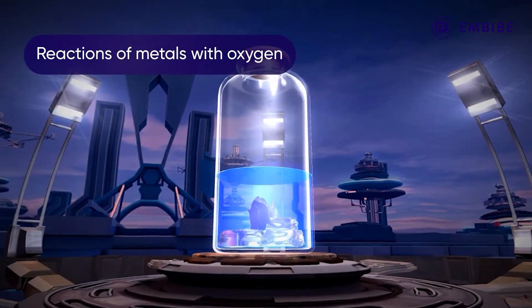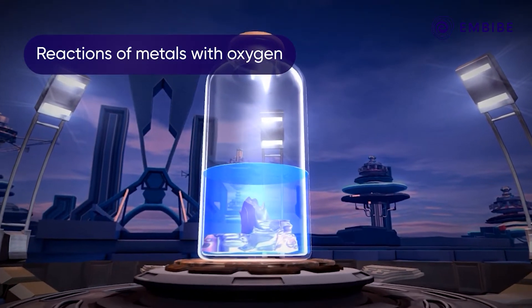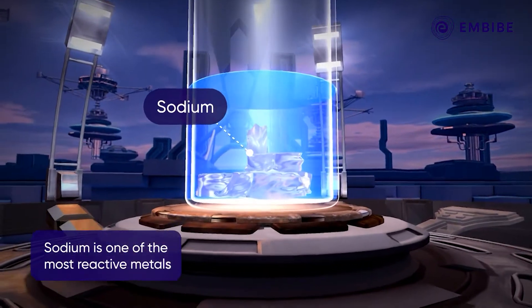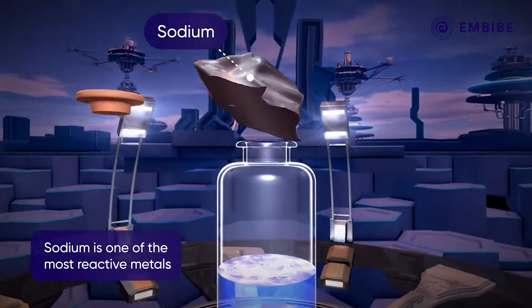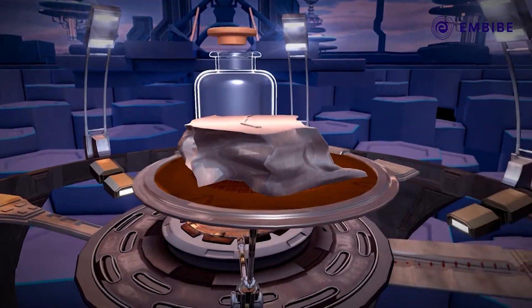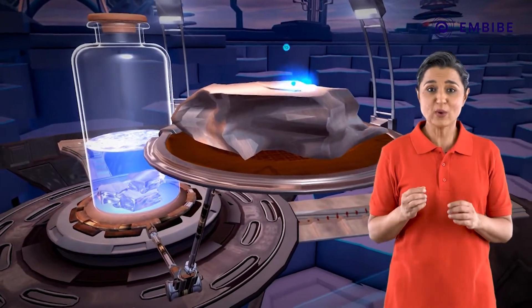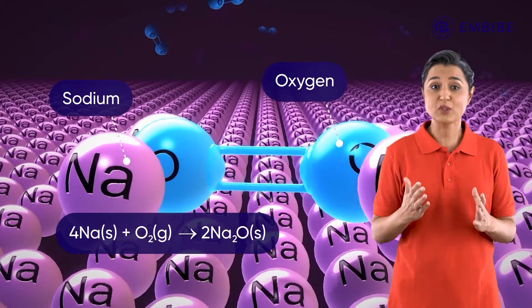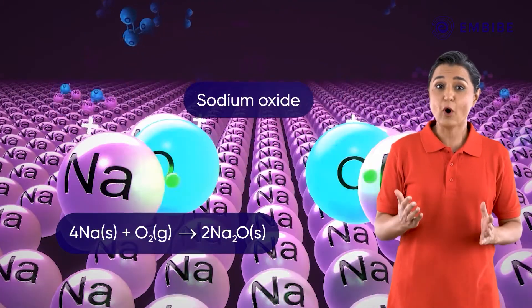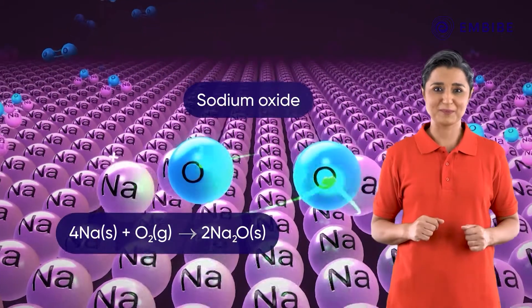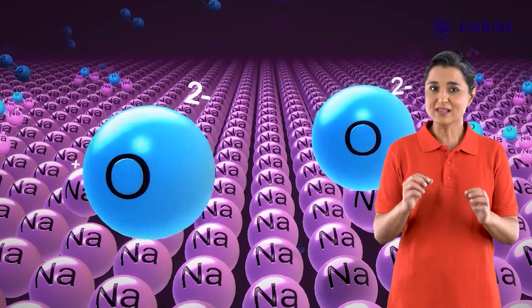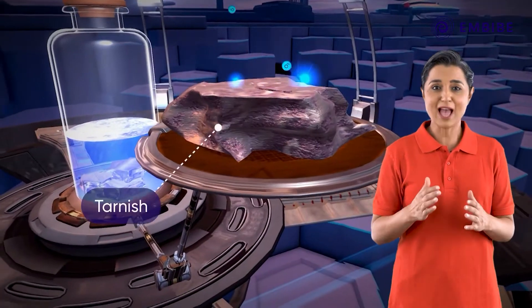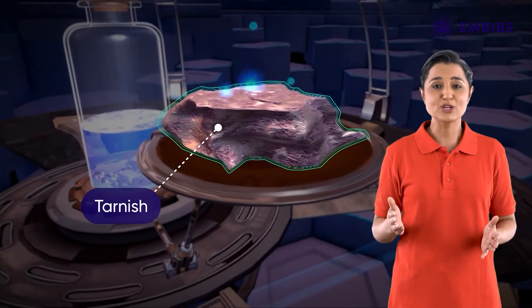Let us begin with the reaction of metals with oxygen. Sodium is stored in kerosene bottles. When exposed to air, sodium immediately reacts with oxygen in the air and forms sodium oxide. This oxide deposits on the surface of sodium and causes it to tarnish.